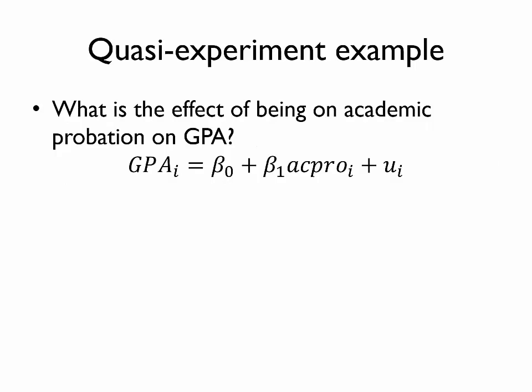This and previous videos have been discussing methods of using natural experiments to measure causal effects, and this is going to cover one final method. We'll start with another example. I'll pose the question: what is the effect of being on academic probation on GPA, grade point average?